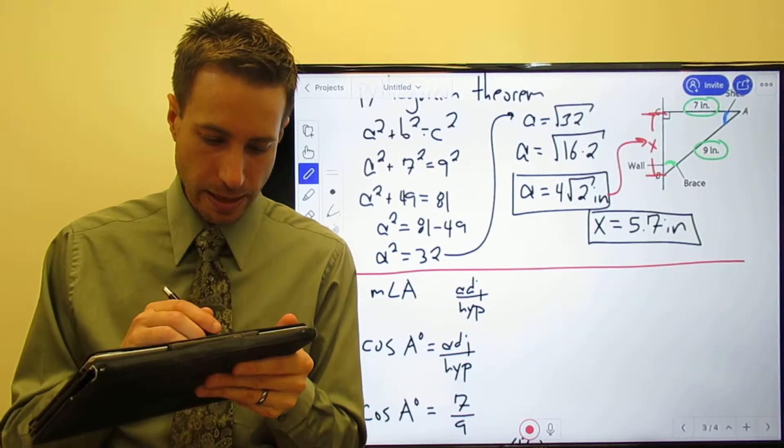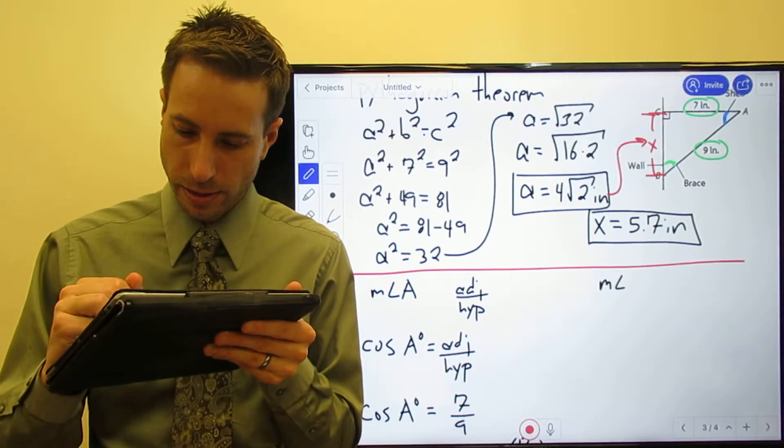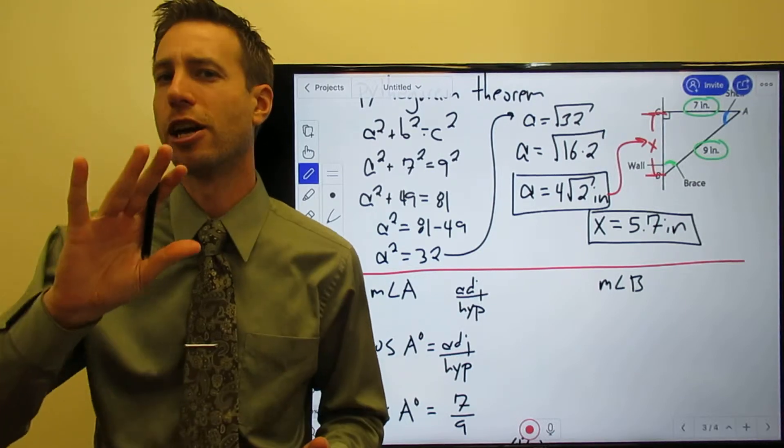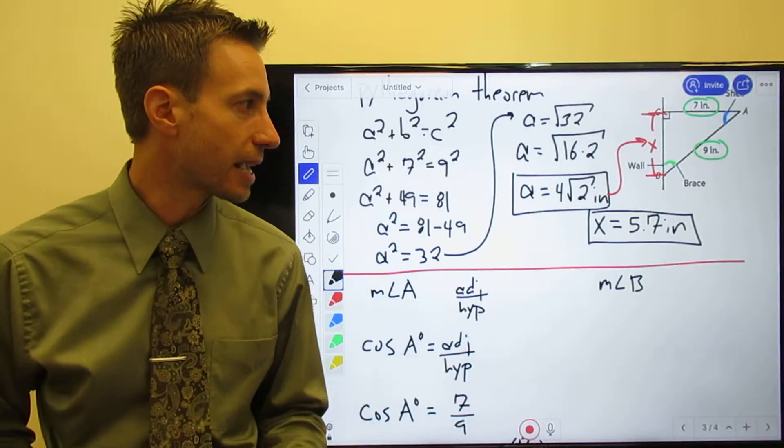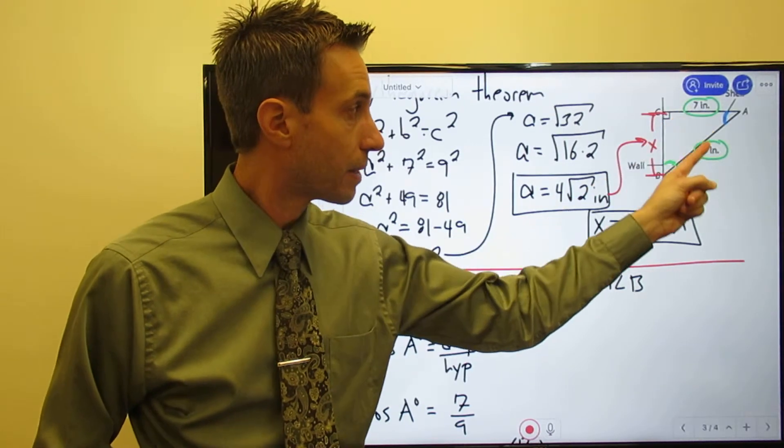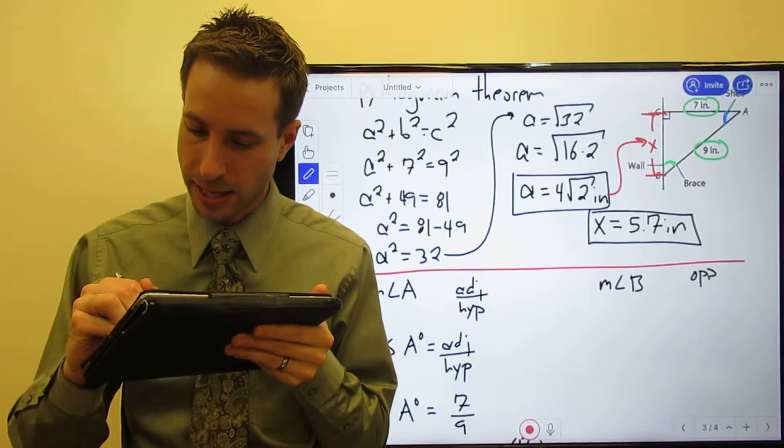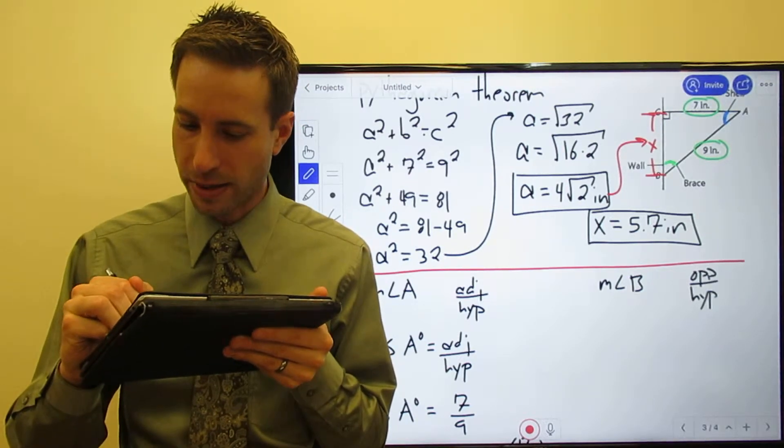So the measure of angle B. I don't want to use numbers that I have calculated, just in case I made a mistake. If this is angle B, that means 7 is the opposite and 9 is still the hypotenuse.